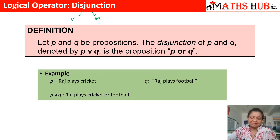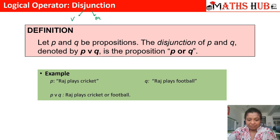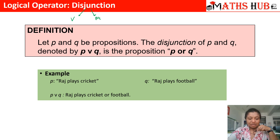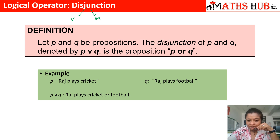Let us understand it with the help of an example. P statement is 'Raj plays cricket' and Q statement is 'Raj plays football'. So what will be P or Q? You will say that 'Raj plays cricket or football'. You need to connect the two statements with the help of the 'or' operator.